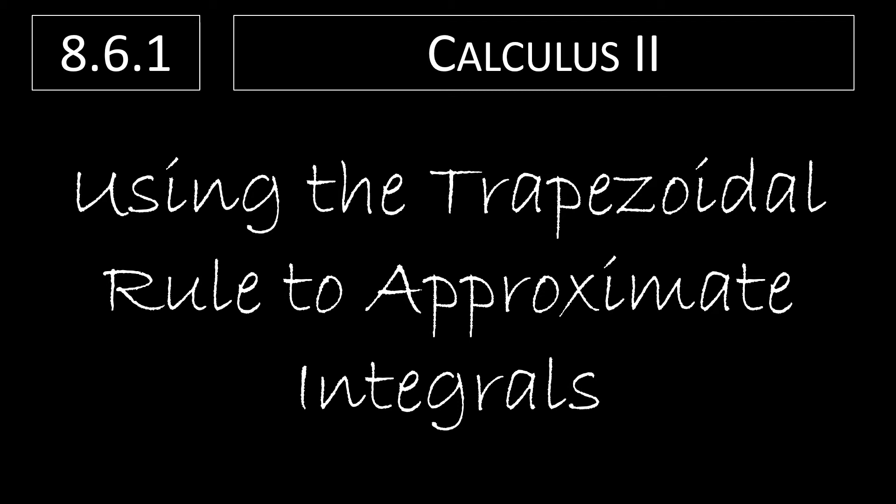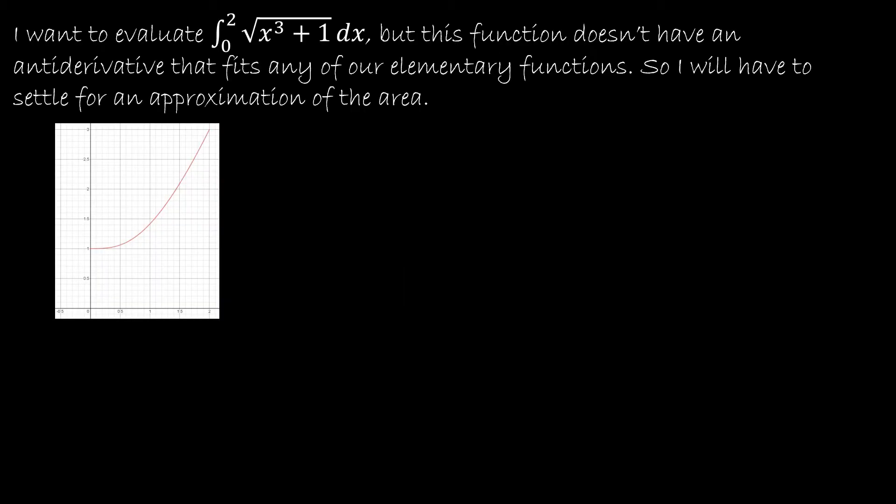In the next two videos we're going to take a look at some numerical integration strategies for when you have an integral that doesn't fit one of our elementary functions or one of our patterns. The first of those two strategies is using the trapezoidal rule. So if I want to evaluate the integral from 0 to 2 of the square root of x³ + 1 dx, it's going to be very difficult for me to do because this function doesn't have an antiderivative that fits any of our elementary functions. So really to get an exact result we have to settle for a bit of an approximation.